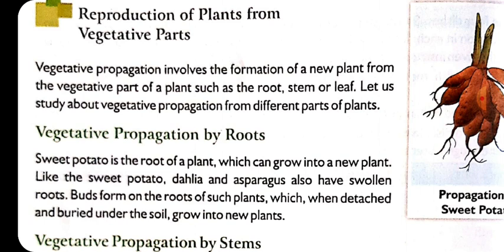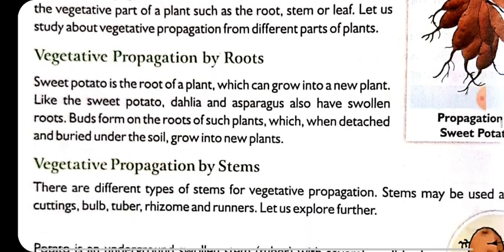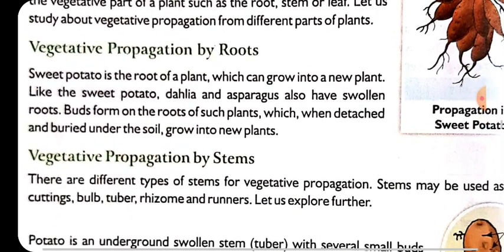It could be leaves, or it could be stem, or it could be root as well. Some special plants have leaves from which a new plant can be grown. These vegetative parts are mostly found in plants whose seeds are not easily available.